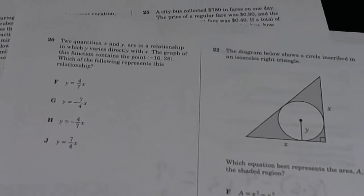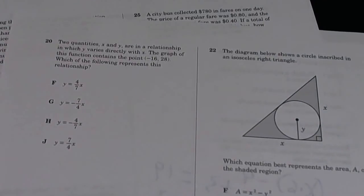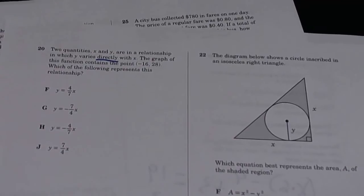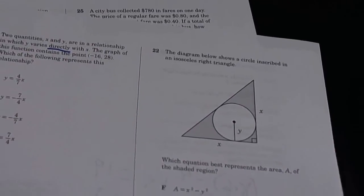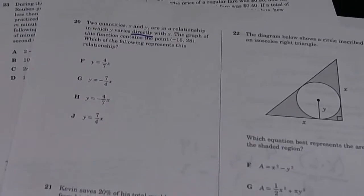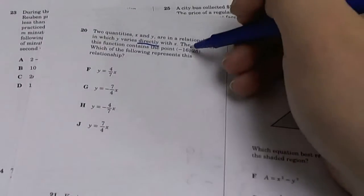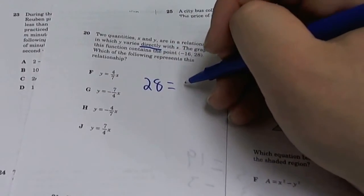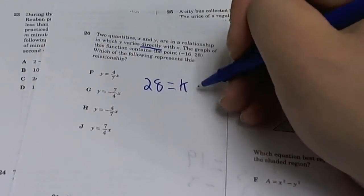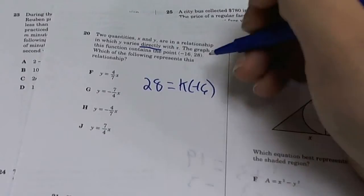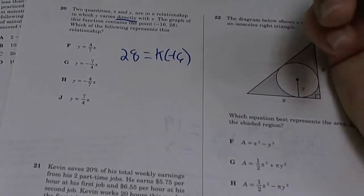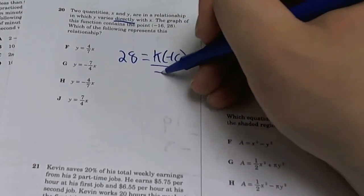Two quantities X and Y are in a relationship in which Y varies directly with X. Directly means it's a one step, so you're going to multiply X by a number to give you Y. So our point is negative 16 and 28. So when this is 28, it's going to be a number - let's call it K times negative 16. We plug in negative 16. Negative 16 times the number is going to give us 28. What is that number we multiply by? Well, you divide by negative 16.